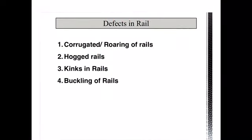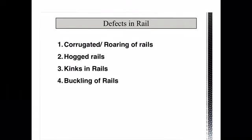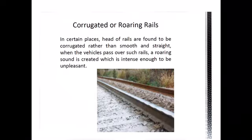We will discuss the defects that can occur in the rail section. These defects are categorized into: first, the corrugated or roaring rails; second, hog rails; third, kinks in rails; and fourth, the buckling of rails. We'll be discussing each defect in detail along with the remedial measures to overcome them.